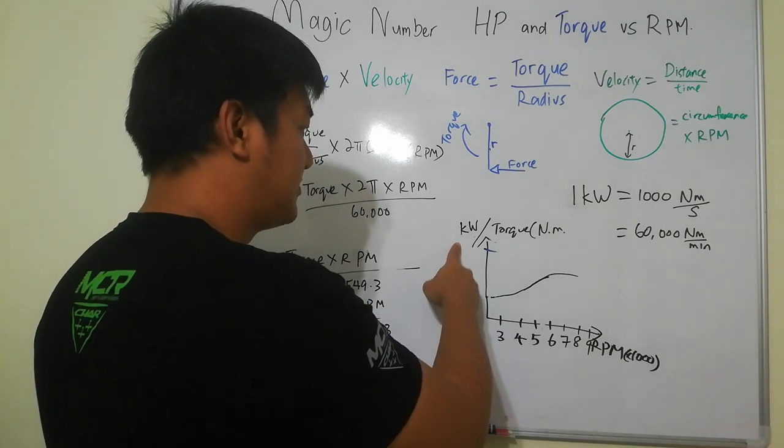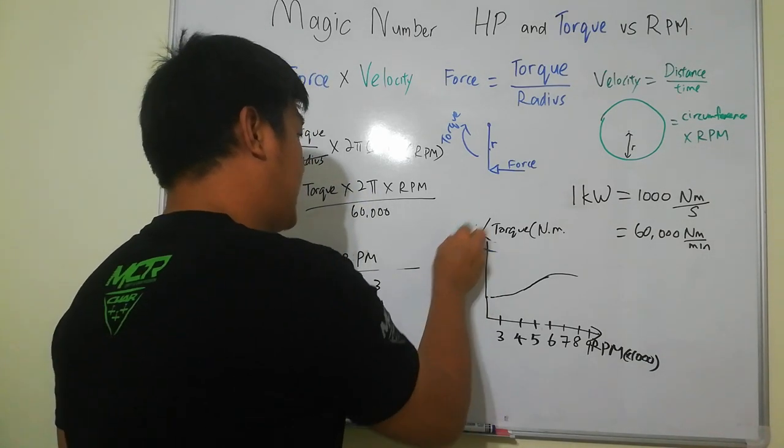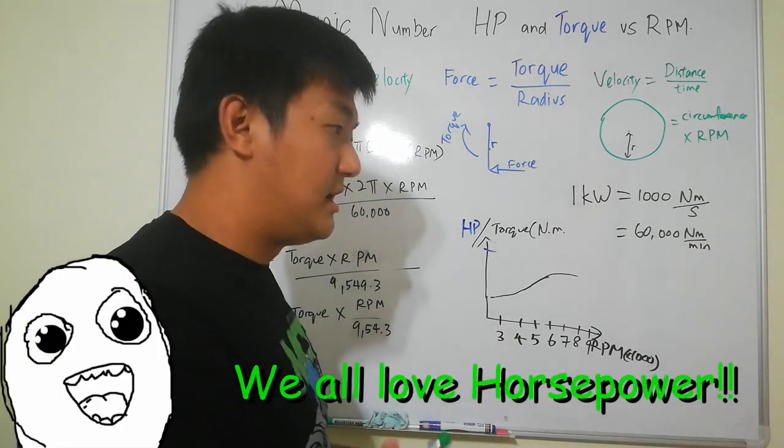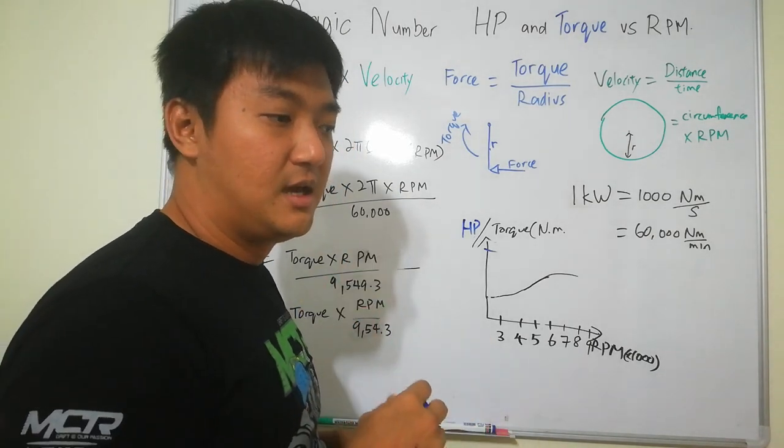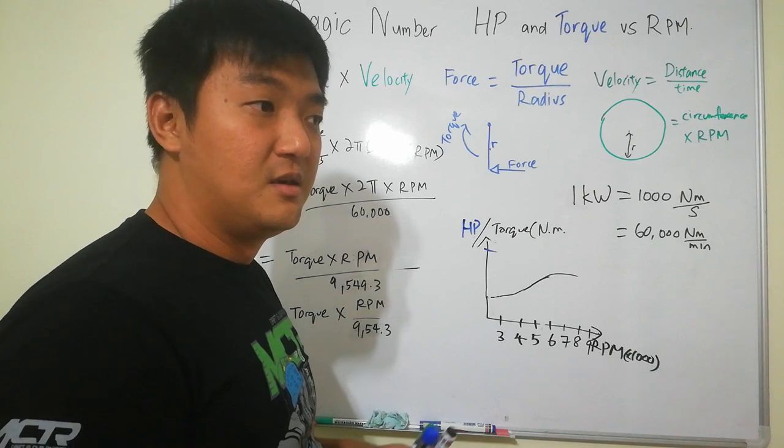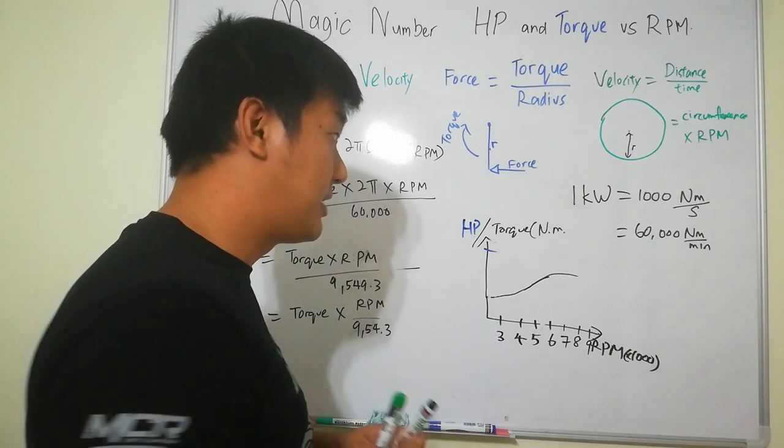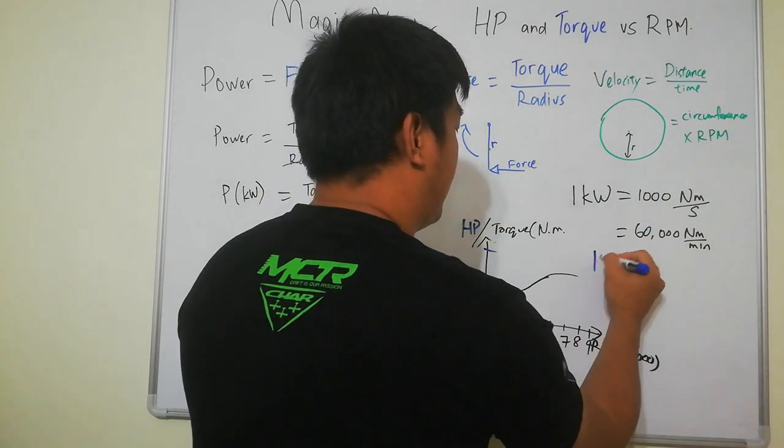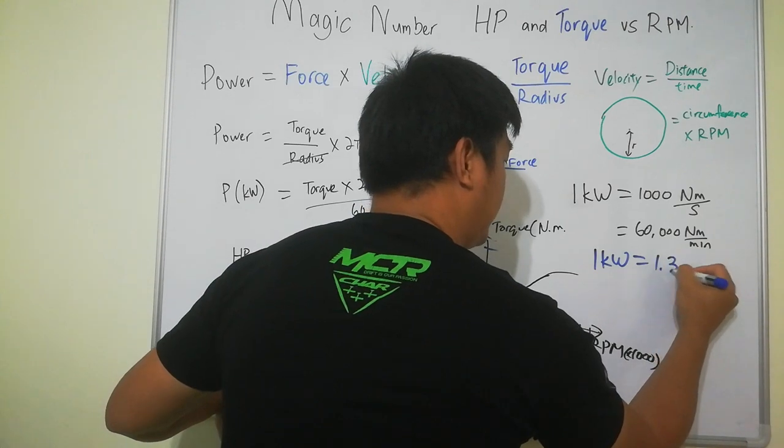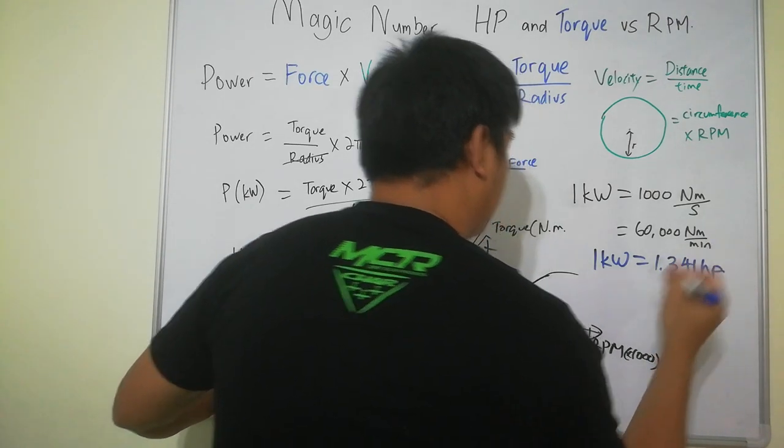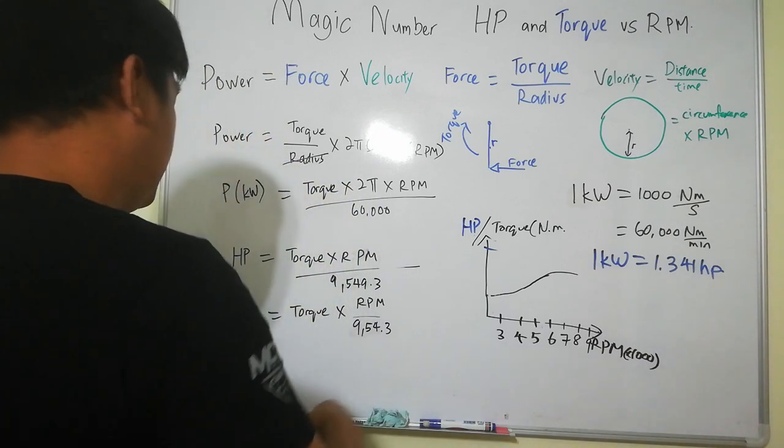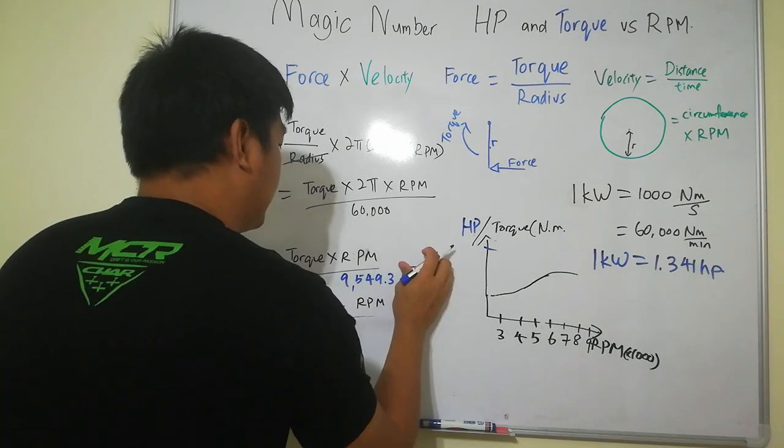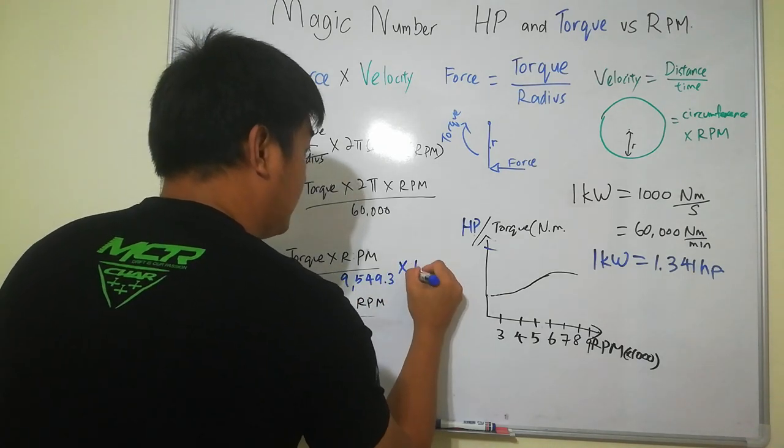So some people they say okay I still want to explain in horsepower because horsepower is universal you can say that and also many people likes to use this number because it is slightly bigger than kilowatt. So how much bigger is very simple. One kilowatt equals to one point three four one horsepower. So if I want to change it into horsepower what is the intersection? This one is very easy just times one point three four one.